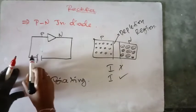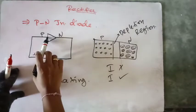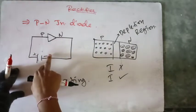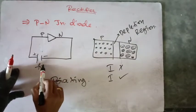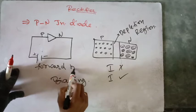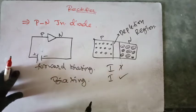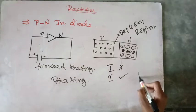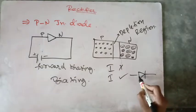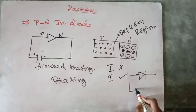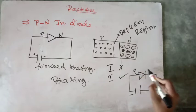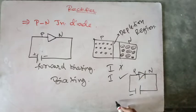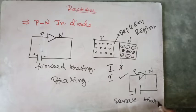If you connect the positive terminal of the battery to the P type, and the negative terminal of the battery to the N type, then this is known as forward biasing. And if you connect the P type with the negative terminal of the battery and the N type with the positive terminal, then this is known as reverse biasing.